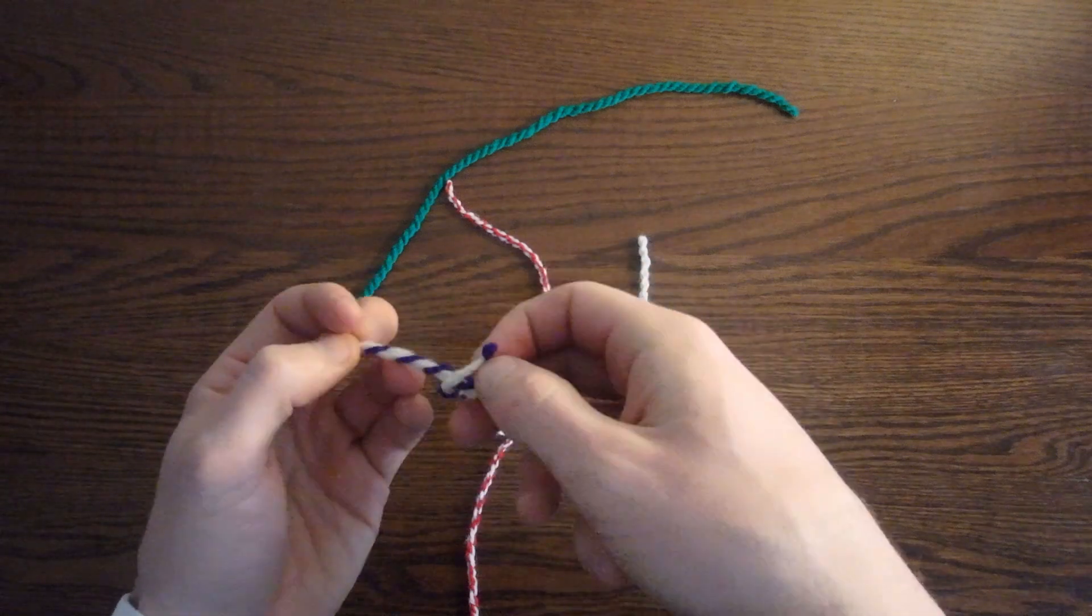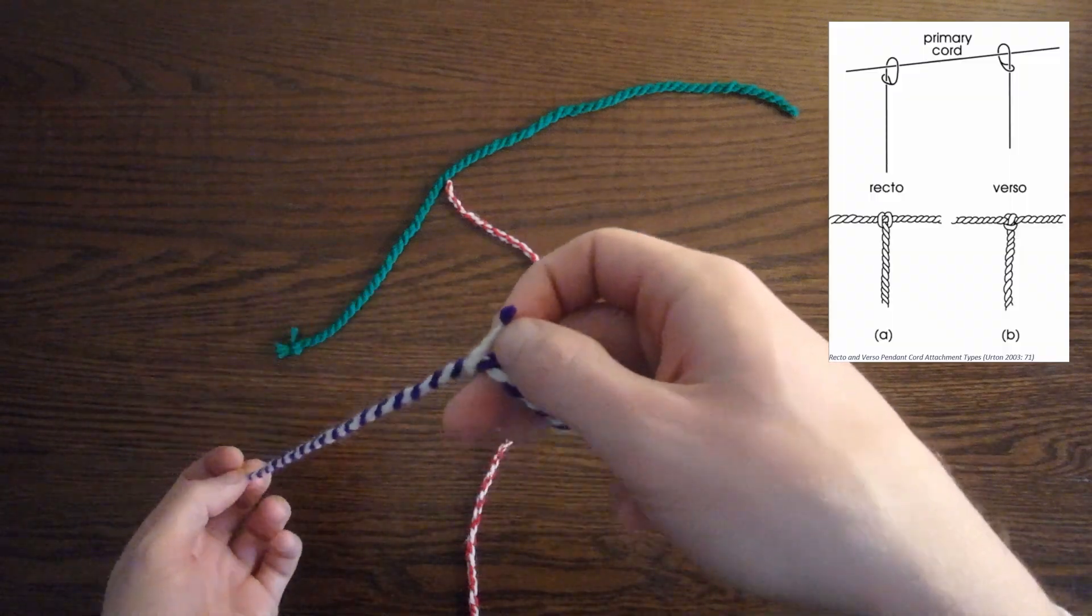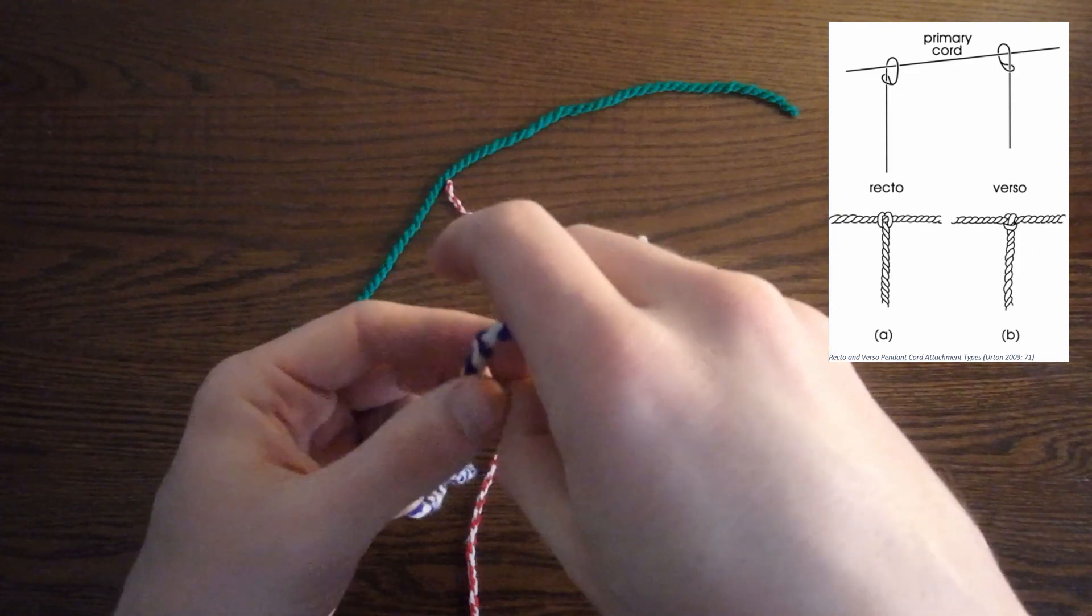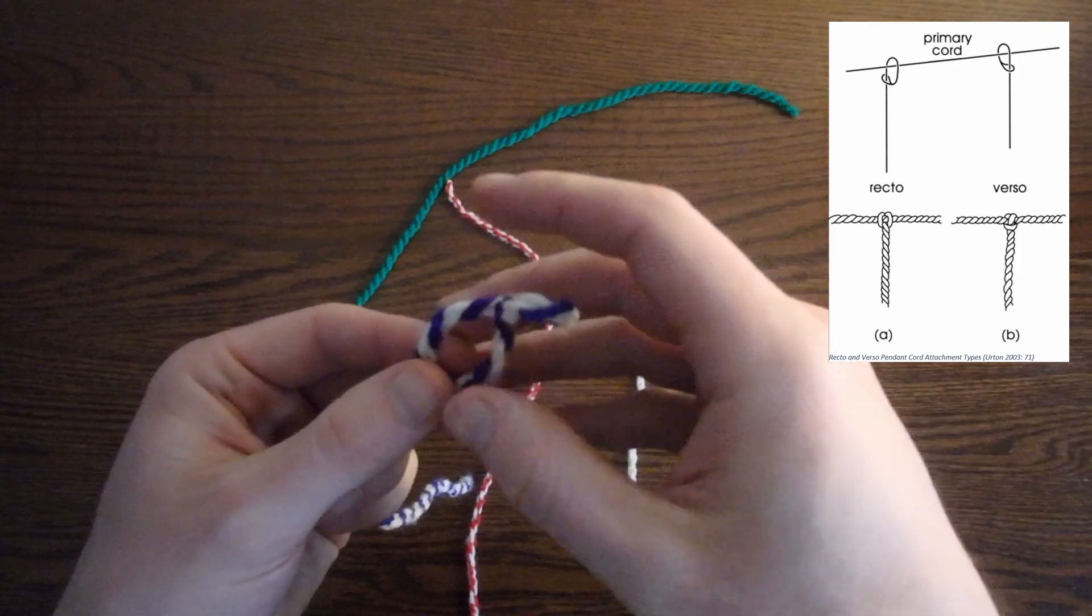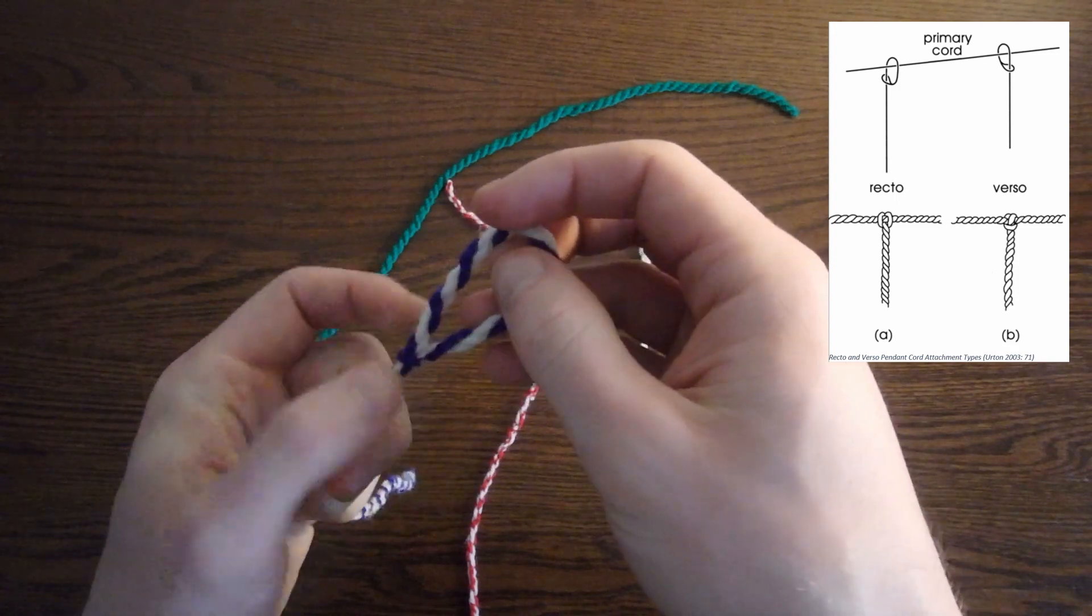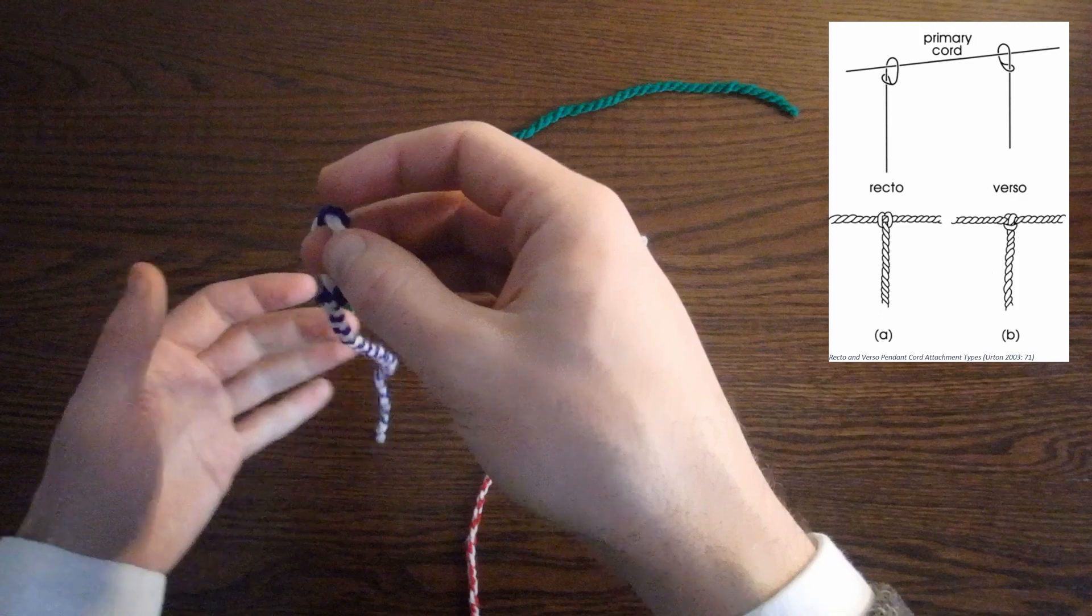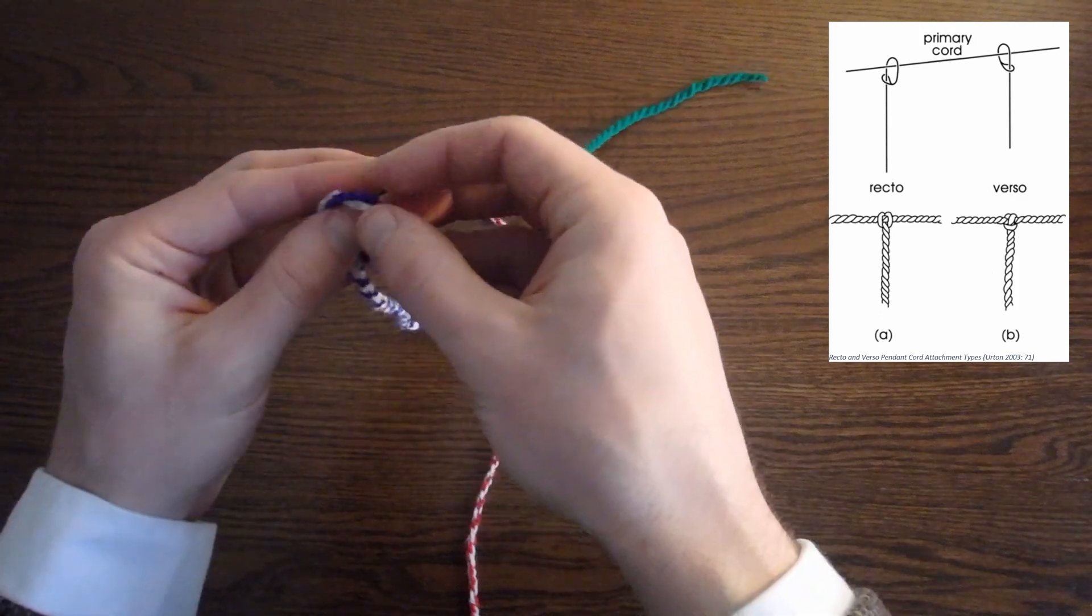Now remember that I can attach pendant cords in one of two ways: recto or verso. If I attach the cord with a loop facing away from me, and the pendant cord on the other side is the primary cord for me, this is called recto. I'm going to attach this first pendant cord in the recto direction.